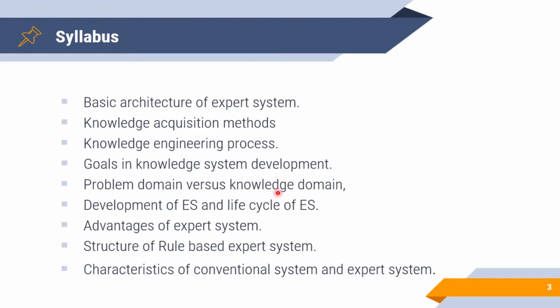We will discuss problem domain versus knowledge domain — there are two types of domains. Then we will cover development of expert system and lifecycle of expert system, different phases of knowledge engineering process, advantages of expert system, structure of rule-based expert system, and characteristics of conventional systems versus expert systems. These are the different contents we will discuss in this series.